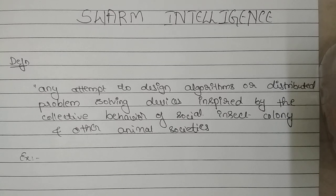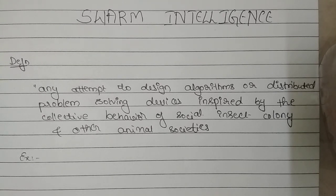Hey guys, welcome to my channel. This is Shashmish, and in today's video we will be seeing swarm intelligence with respect to artificial intelligence. When we hear the name 'swarm', swarming means the aggregation of similar animals generally moving towards the same direction.